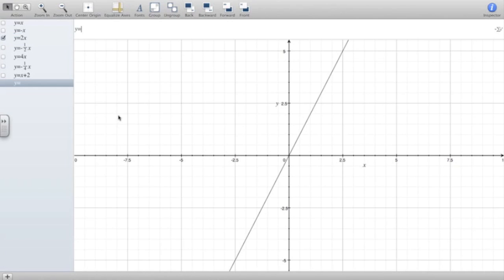So y equals negative 2x. Let's draw that line. You can see straight away that those two lines are not perpendicular. They do not intersect at 90 degrees.